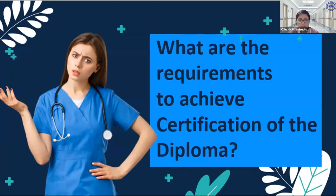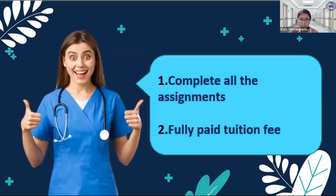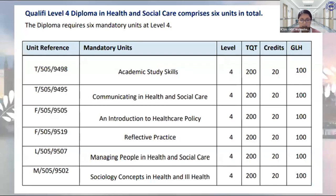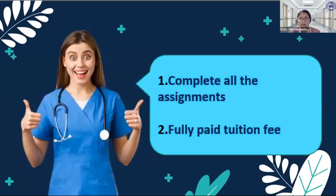To achieve certification of the diploma, unlike regular college courses with midterms or finals, here you are only required to answer assignments — one per unit. That means you need to submit six assignments in total. They must be complete, written in English, understandable, and meeting a score of at least 40 on the rubric. You also need to fully pay the tuition fee.